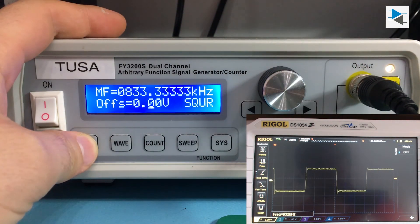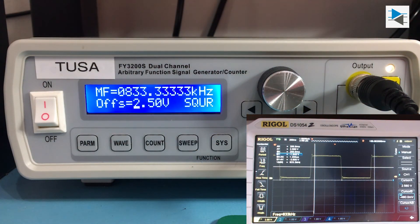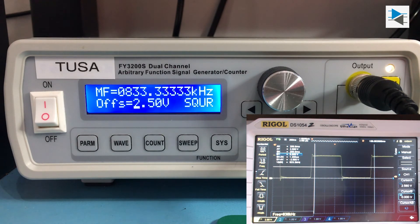The last remaining thing is to set an offset of positive 2.5 volts, because our set 5 volts oscillates between minus 2.5 and 2.5 volts at the moment, and we want a nice square wave from 0 to 5 volts.